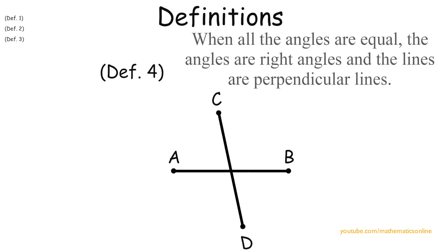Definition number five, when all the angles of the two lines are equal, the angles are called right angles and the lines are perpendicular lines.